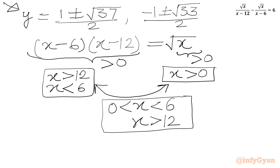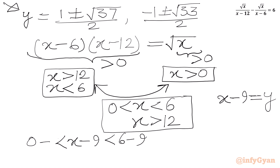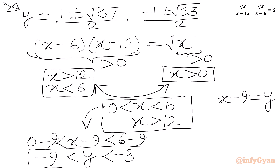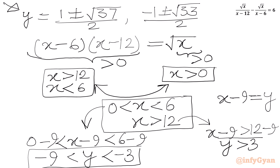Our solutions are in y, and since x minus 9 equals y, we convert our conditions on x to conditions on y by subtracting 9. From the interval (0, 6), subtracting 9 gives y in the interval (minus 9, minus 3). From x greater than 12, subtracting 9 gives y greater than 3. So the two conditions are: y greater than 3, or y in the interval (minus 9, minus 3).